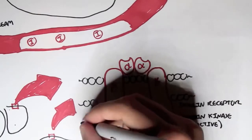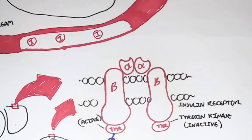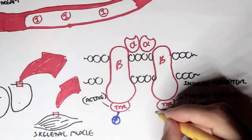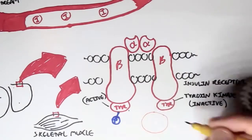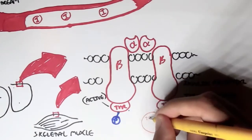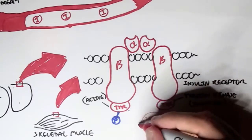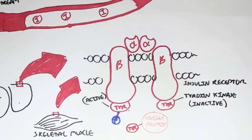So tyrosine kinase, when it has a phosphate group, is active. Inside the cell — in the cytosol, the intracellular fluid — there is a target protein with a tyrosine amino acid. This target protein is inactive when it is not phosphorylated.